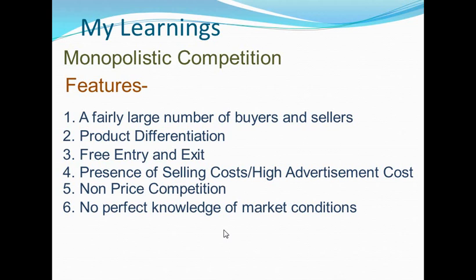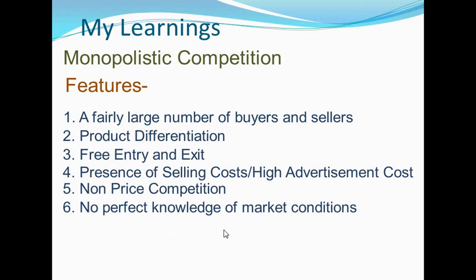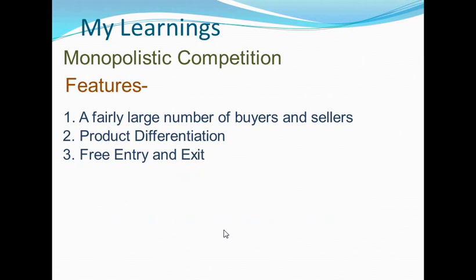No perfect knowledge of market conditions: buyers and sellers don't have perfect knowledge about available products and prevailing market prices. Imperfect mobility of factors of production: factors of production are not perfectly mobile in this type of market structure.